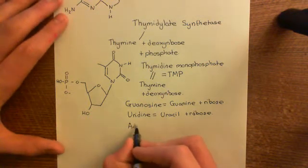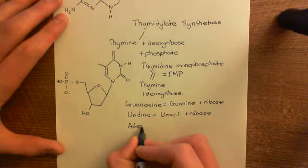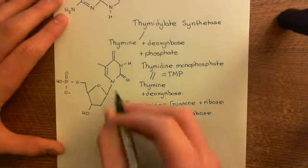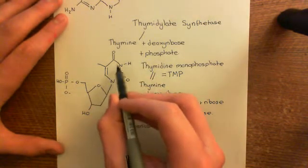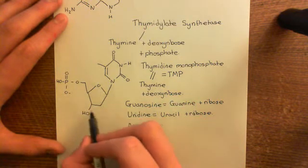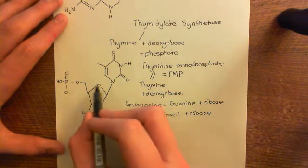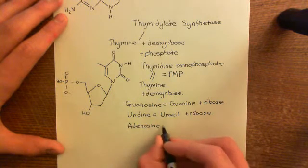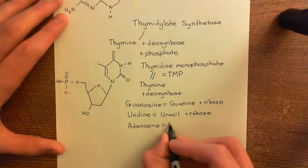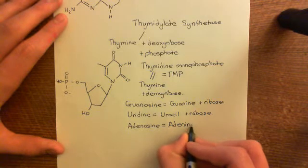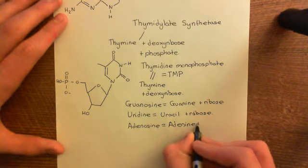Adenosine means adenine bound to ribose — just like the others, but you've got your organic base with ribose rather than deoxyribose, so you'll have an alcohol group on there.